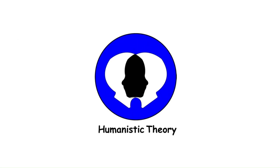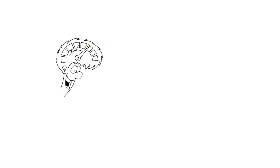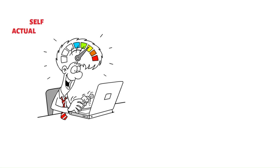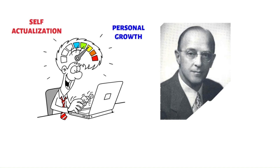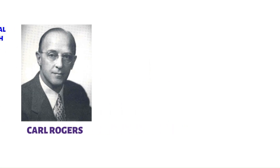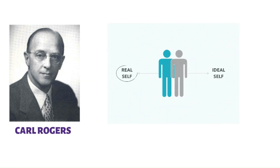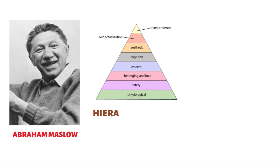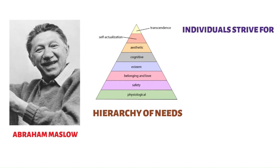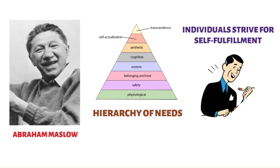Humanistic Theory emphasizes individuals' inherent drive for self-actualization and personal growth. Carl Rogers proposed the importance of congruence between the real self and the ideal self, while Abraham Maslow introduced a hierarchy of needs, suggesting that individuals strive for self-fulfillment once basic needs are met.